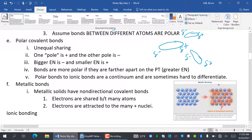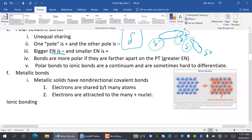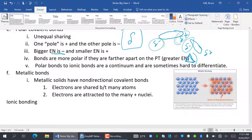Polar covalent bonds. Unequal sharing. One is positive and the other end is negative. This is kind of normal. You don't share evenly with about anybody in your life. The bigger electronegativity is the one that's a little bit negative, and the smaller is a little bit positive. So because these aren't full charges, we use the Greek letter delta. So this is the lowercase delta, and it means a little bit. So this end is a little bit negative, and this end is a little bit positive, which means these negatives would be attracted to it. Bonds are more polar if they're farther apart on the periodic table, and that's greater electronegativity change. So they have to have a difference in their greater electronegativity. Polar bonds to ionic bonds are a continuum and are sometimes hard to differentiate.